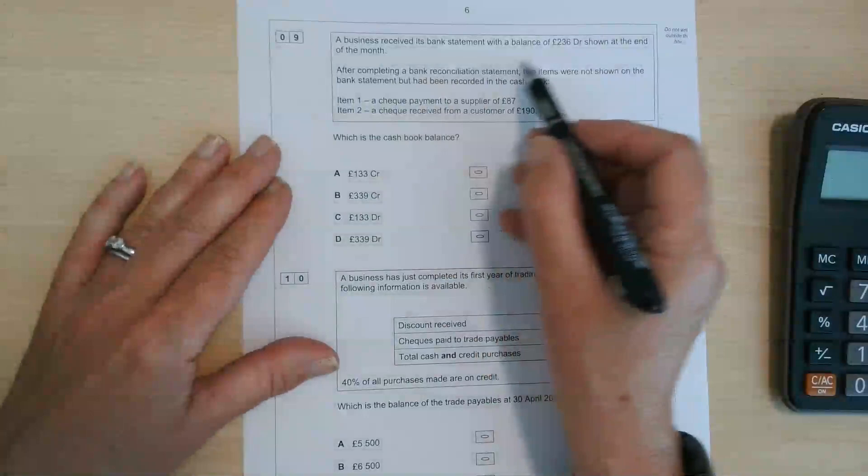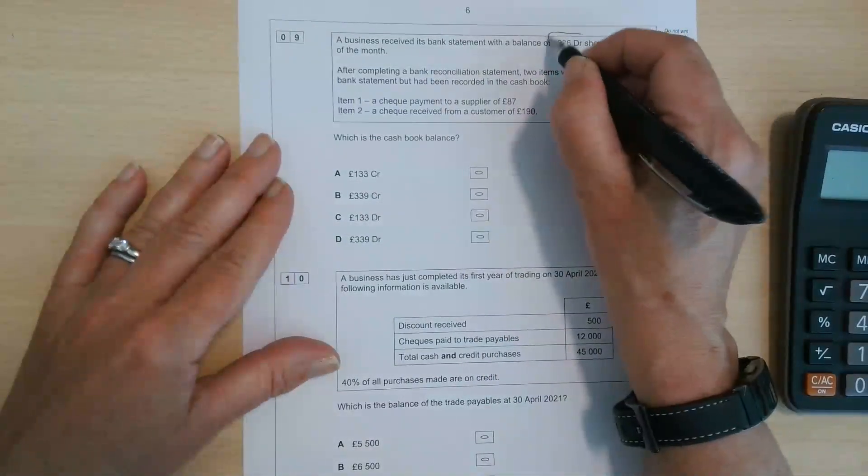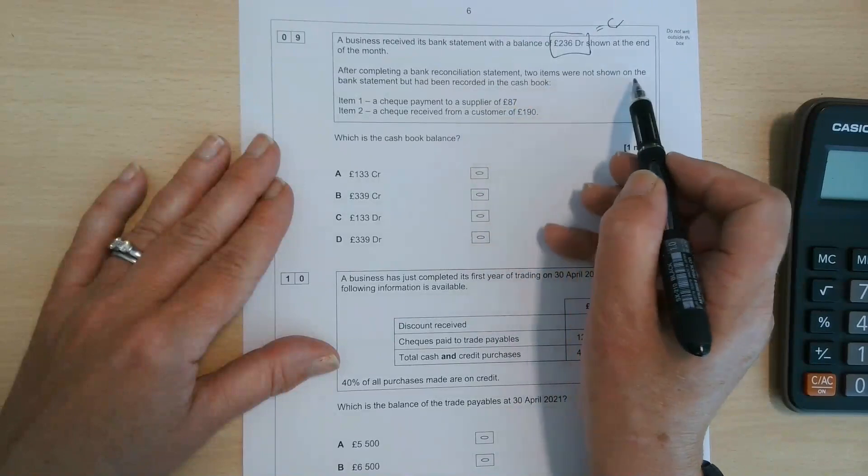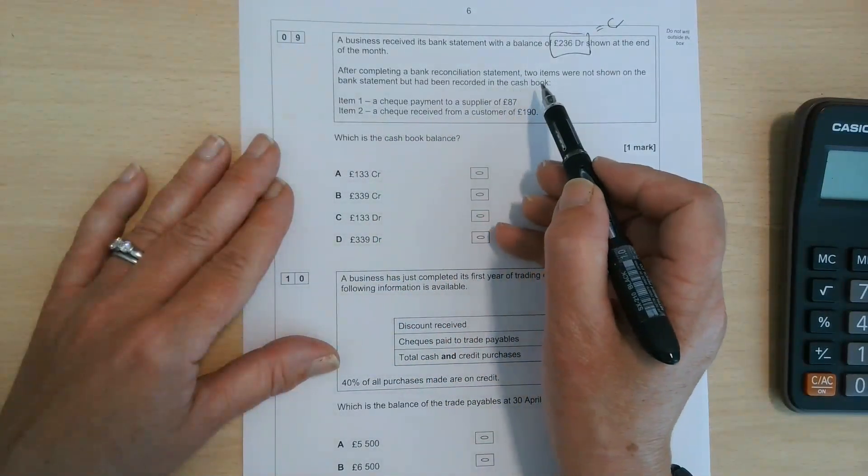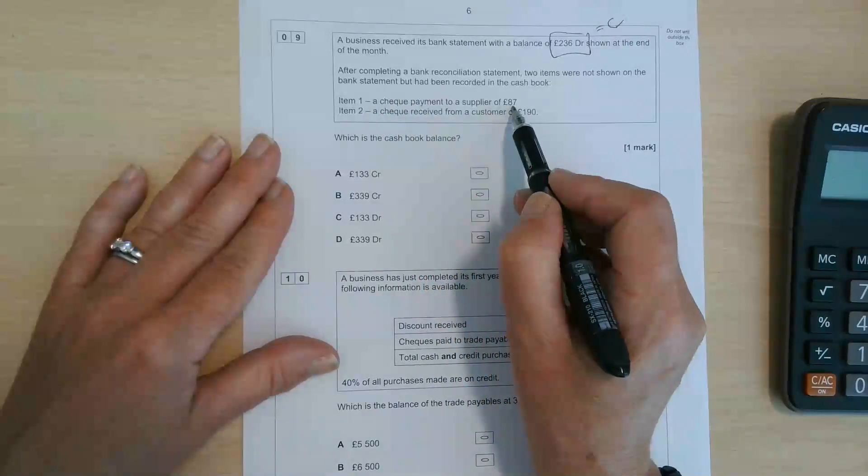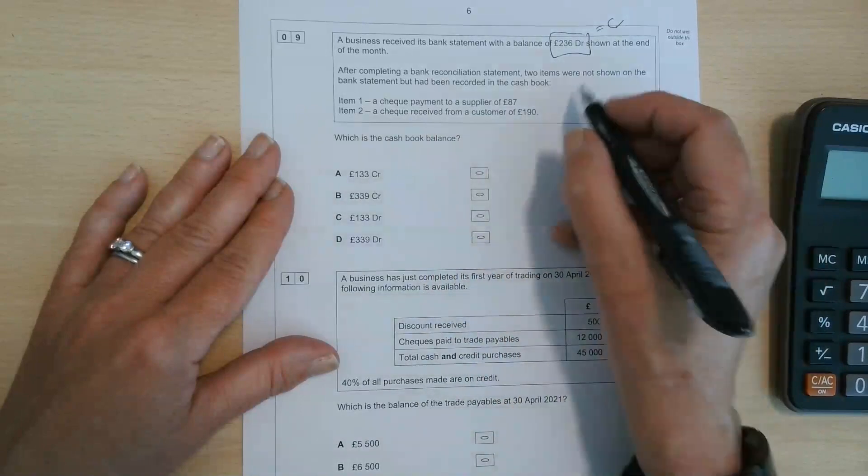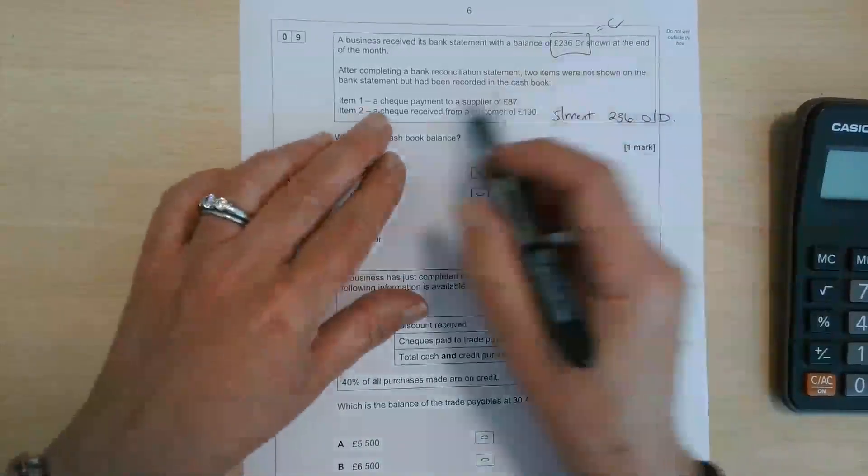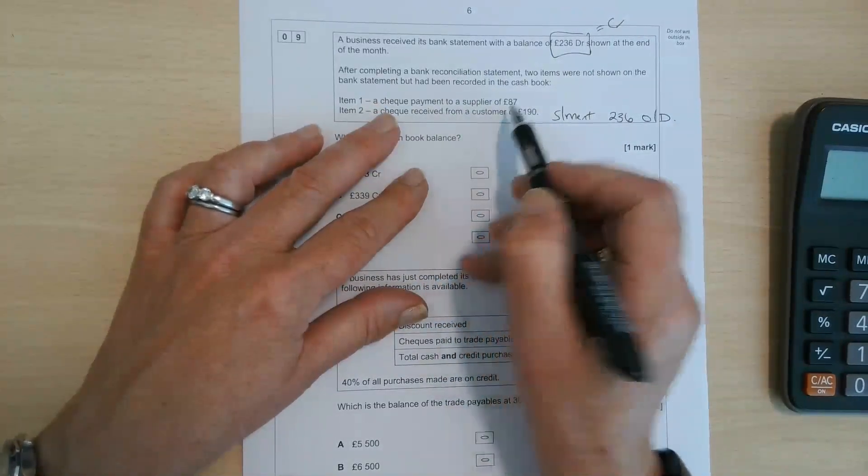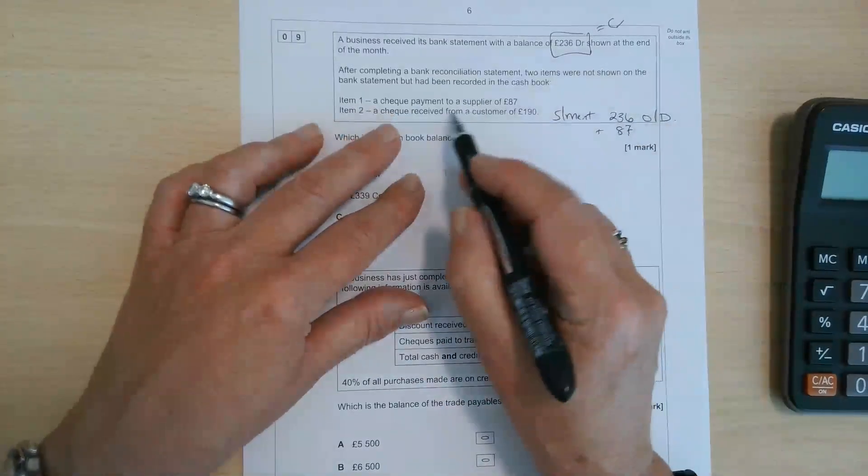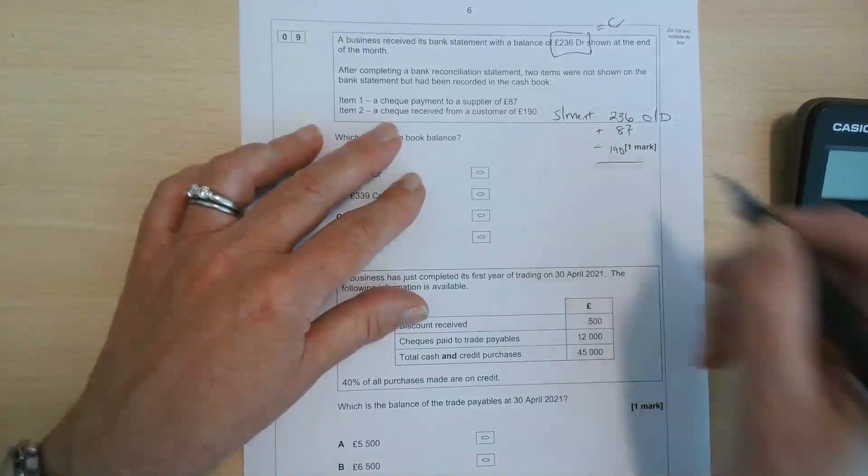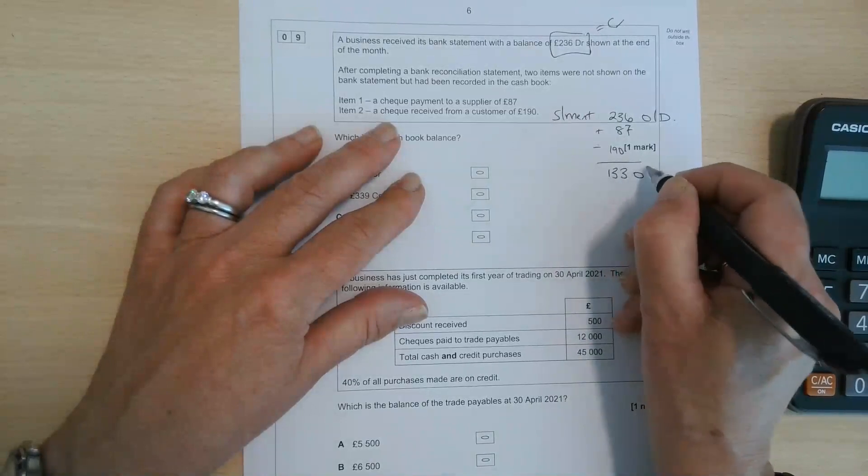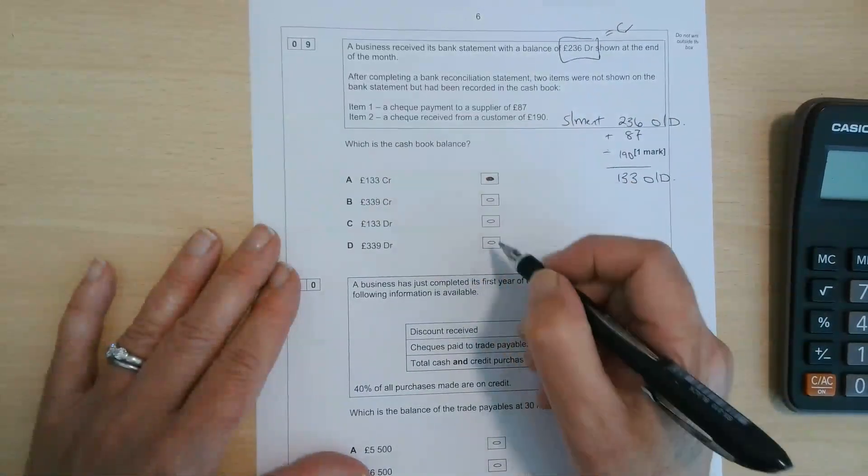Let's have a look at number nine. A business received its bank statement with a balance of 236 debit. Remember in our books, that's going to be a credit balance equivalent to an overdraft at the end of the month. After completing a bank reconciliation statement, two items were not shown on the bank statement that had been recorded in the cash book. So a check payment to a supplier of £87 and a check received from a customer. So if we start with the statement balance of 236, actually in our books, it's overdrawn £236. So the check payment to a supplier, £87 will actually make that overdraft worse. So we add that on. Check received from a customer though, minus £190 will actually reduce the overdraft. So the answer for number nine is A.